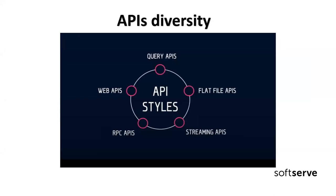Alongside these technologies, the approaches and paradigms in the industry also changed. Mostly in 2000, we had customer-specific APIs — one API and one client or a limited number of clients. Starting around 2010, we began to have more and more API clients and the requirements for APIs changed. We can group APIs by what they do into the next groups.